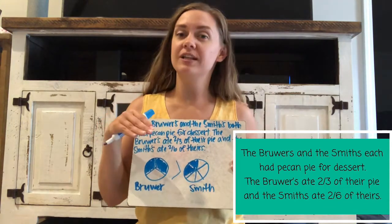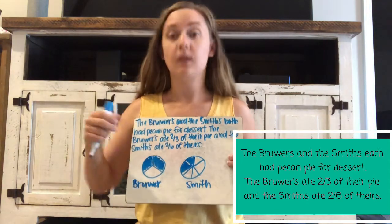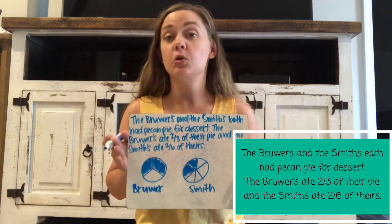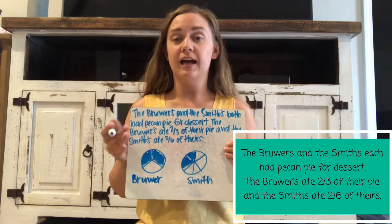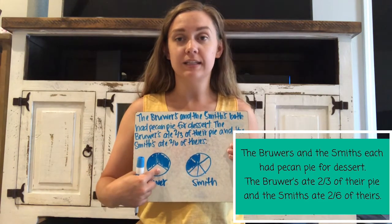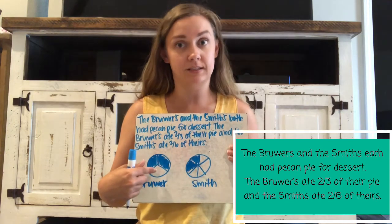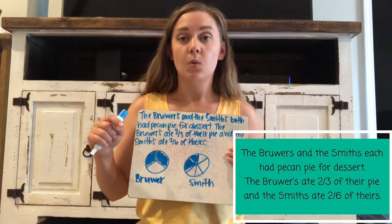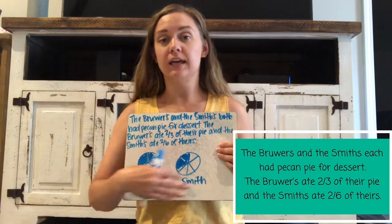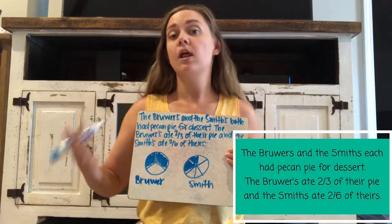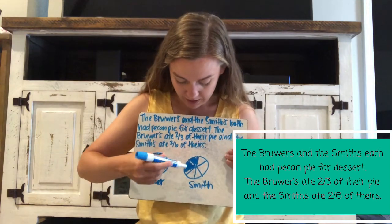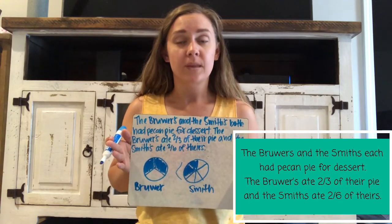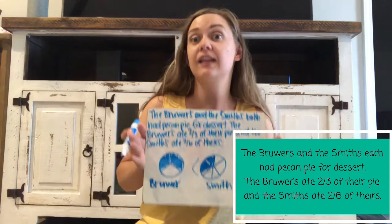But what if I asked a different question? Now I want us to think about who has more pie left over. The Brewers ate two out of three pieces, so they have one out of three pieces left. The Smiths ate two out of six pieces, so they have four of their pieces left over. Looking at that, I can definitely see that the Smiths have a lot more pie left over. So the Brewers have less pie left over than the Smiths.